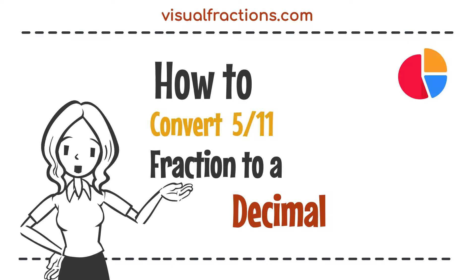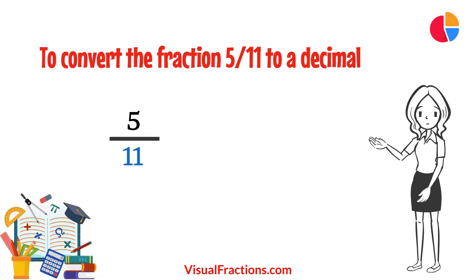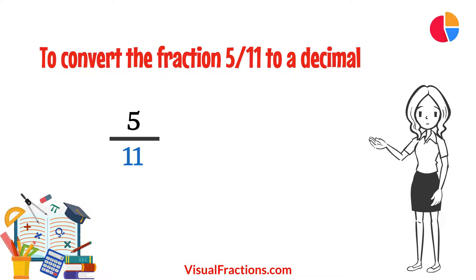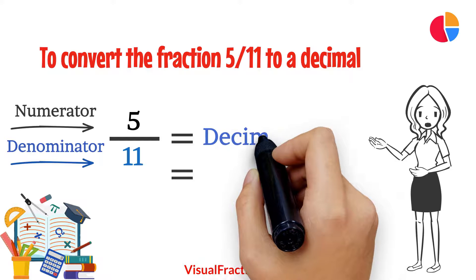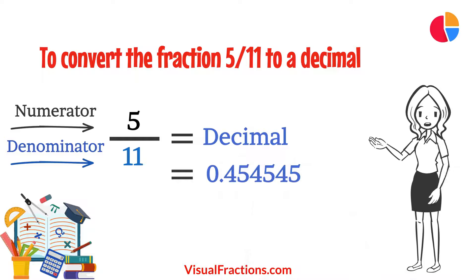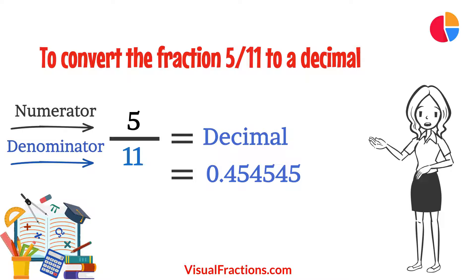Welcome to the Visual Fractions YouTube channel. Today, we're going to explore how to convert the fraction 5 elevenths to a decimal. To convert the fraction 5 elevenths to a decimal, we simply divide 5 by 11. This division results in the decimal 0.454545, where the digits start to repeat after a certain point.